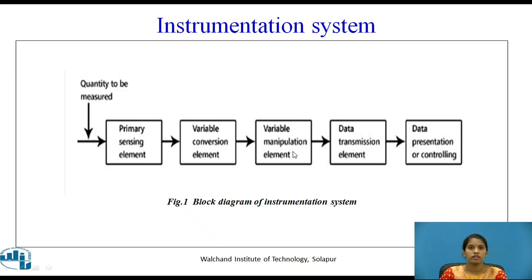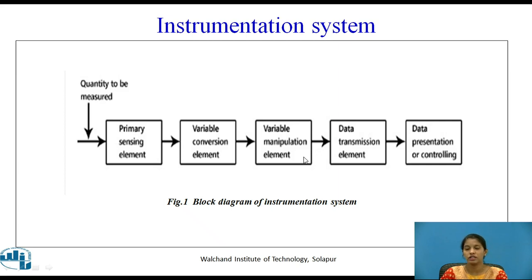The variable manipulation stage is also known as the signal conditioning stage. Here the signal can be conditioned according to the requirement of the next stage — including signal conditioning, signal filtering, and signal amplification. In data transmission, the signal or output is transferred from one place to another. The final stage is data presentation or data controlling, where the data is given to the data recorder or data presentation element.